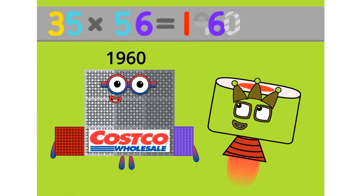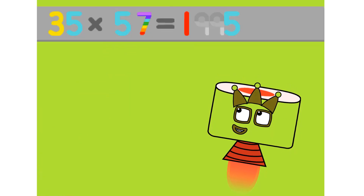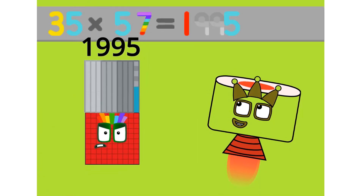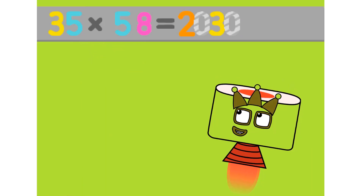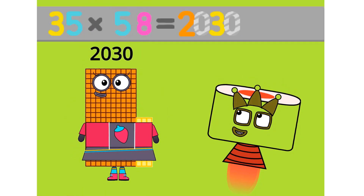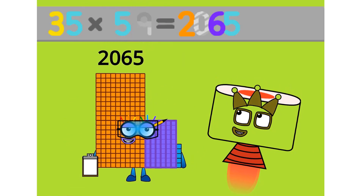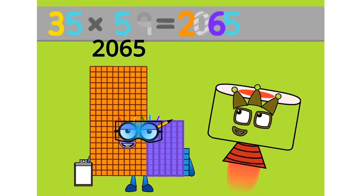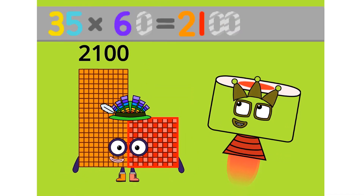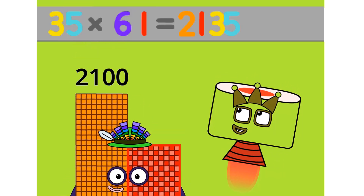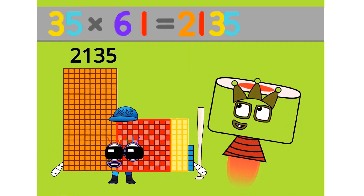35 times 56 equals 1960. 35 times 57 equals 1995. 35 times 58 equals 2030. 35 times 59 equals 2065. 35 times 60 equals 2100. 35 times 61 equals 2135.